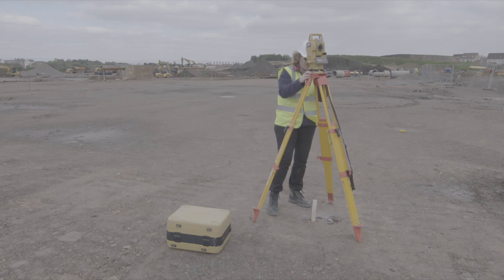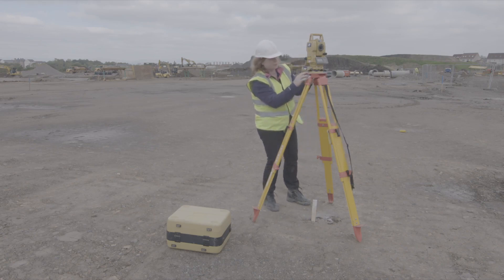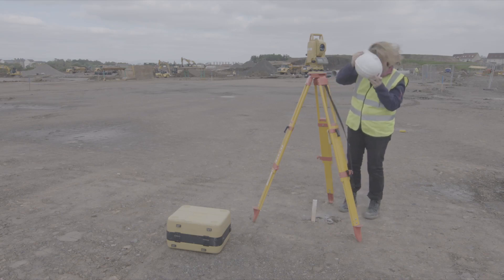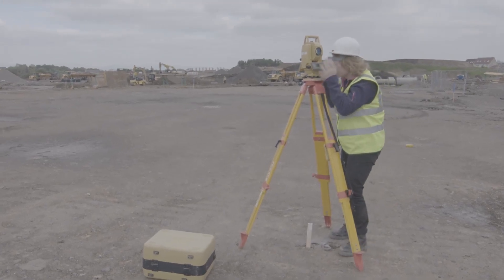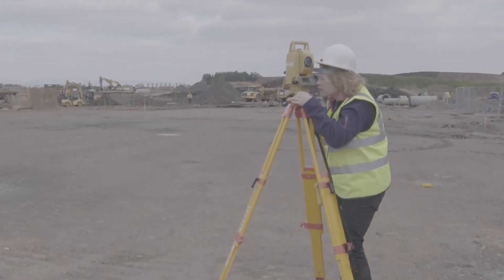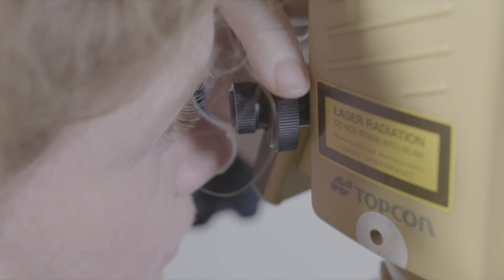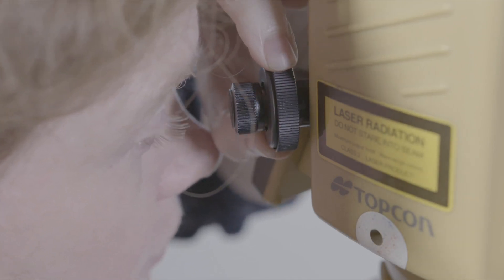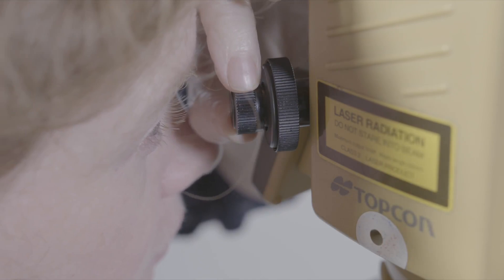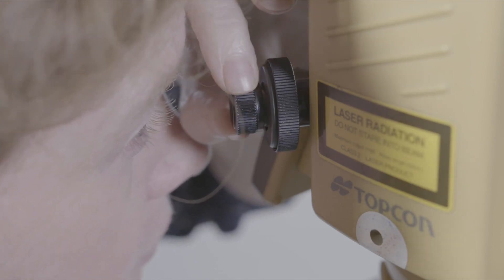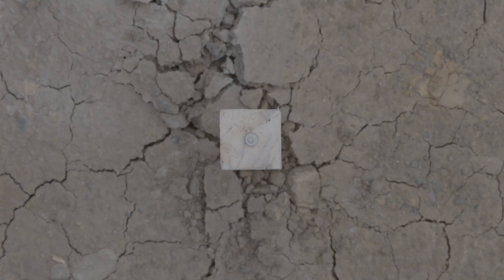The next stage is to get the total station itself level and centred over the nail. There are two different steps to this stage that you need to just repeat as necessary. So step one is looking through the optical plummet and use the foot screws to bring the black circle onto the nail. You've got two focus adjusters there. The one closest to your eye focuses the black circle and the one furthest away from your eye focuses the object that you're looking at, which in this case is the nail.